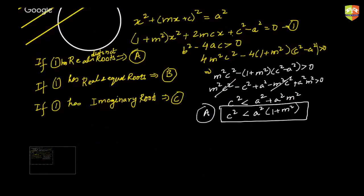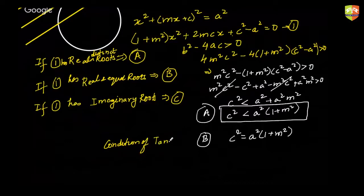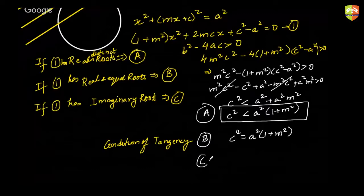Similarly, for case B, c² = a²(1 + m²). And for case C, c² > a²(1 + m²).